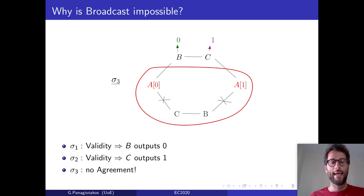Finally, in the third scenario, A, the sender is corrupt. In the eyes of B, it acts as if it was broadcasting 0. In the eyes of C, it acts as if he was broadcasting 1. Now, we can show that in the eyes of B, sigma 3 and sigma 1 are indistinguishable, while in the eyes of C, sigma 3 and sigma 2 are indistinguishable. Hence, in sigma 3, B and C should output the same values they output in sigma 1 and sigma 2, respectively. Hence, they should output 0 and 1, and thus, agreement no longer holds.